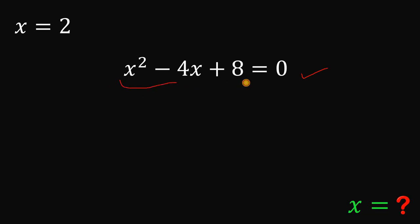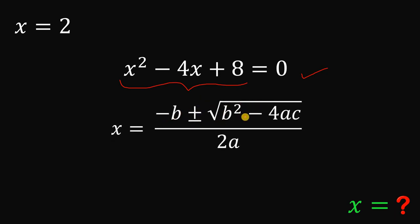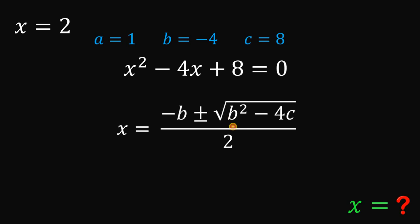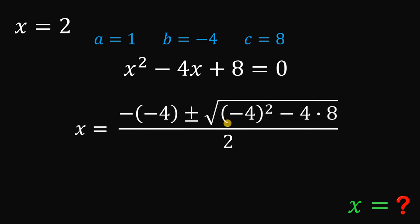This equation is not factorable, so we will use the quadratic formula: x equals negative b plus or minus square root of b squared minus 4ac, all over 2a. The value of a is 1, the coefficient of x squared. The value of b is negative 4, the coefficient of x. And the value of c is positive 8, the constant term. So we are now ready to solve for the values of x, replacing all a with 1, b with negative 4, and c with 8.